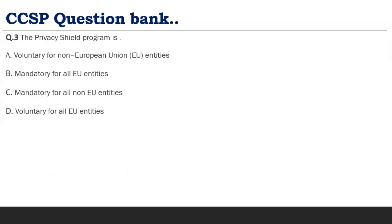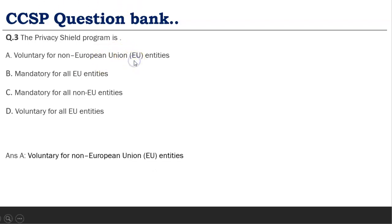The Privacy Shield program options might be: voluntary for non-European Union entities, mandatory for all European entities, mandatory for all non-European entities, or voluntary for all European entities. We have seen that the Privacy Shield program is for non-European members — and it is voluntary. There are three options: enact a national law, join the Privacy Shield, or use contract clauses. So the answer is voluntary for non-EU countries wishing to do business with Europe.